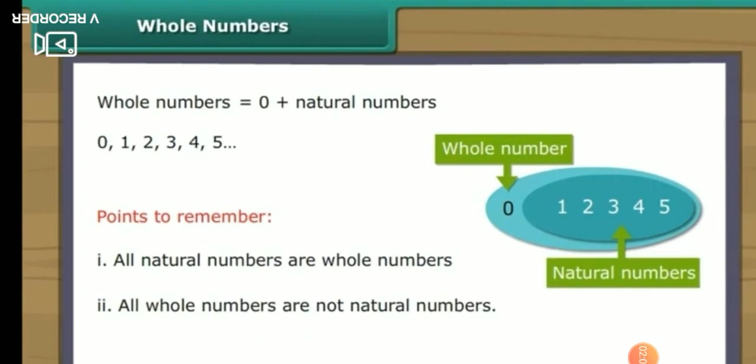For example, 0, 1, 2, 3, 4, 5 and so on — here 0 is not a natural number. Therefore, all whole numbers are not natural numbers. Dear students, you have to remember that all natural numbers are whole numbers, but all whole numbers are not natural numbers.